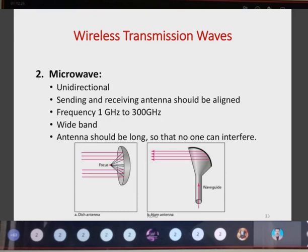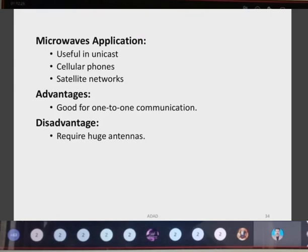Another wave type is microwave, which is unidirectional in nature. The sending and receiving antennas must be aligned — if the alignment changes, there may be interference in the transmission. The frequency range for microwave transmission is 1 GHz to 300 GHz, giving it a wide band compared to radio waves which have a narrow band. Applications include unicast communication, cellular phones, and satellite networks. Advantage: good for one-to-one communication. Disadvantage: requires large antennas and a directed wave to establish the connection.